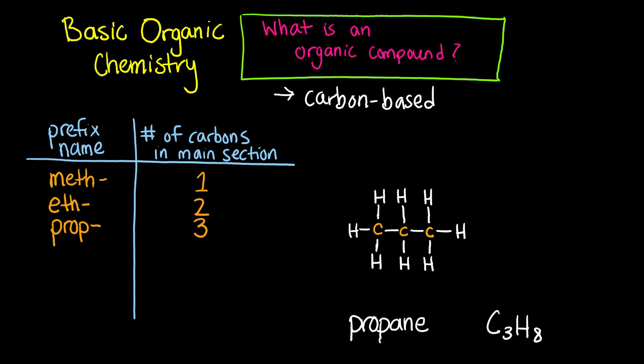The prefix prop means three carbons, so propane, which is a fuel that many people have heard of, is C3H8 for the formula. There are three carbons and eight hydrogens. The prefix but means four carbons, so butane, which is found in lighters, is C4H10.